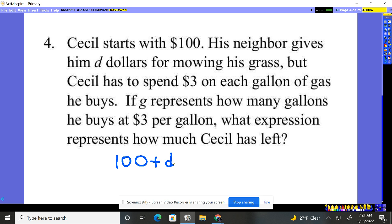But here's the problem. I had to spend, in other words take away, spending $3 on each gallon of gas. If g represents how many gallons he buys at $3 per gallon, what expression represents how much I have left? Well, I know right now I have $100 plus the d dollars my neighbor gave me, and then I need to subtract whatever I spent for gas.